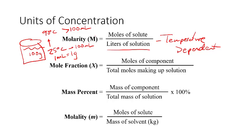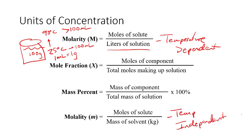Looking at the molality term — moles of solute over the mass of solvent in kilograms — 100 grams of water will weigh 100 grams no matter what temperature we're dealing with, whether 25, 90, or 1 degree Celsius. So this molality term is temperature independent, and it is therefore the concentration term we use for any considerations involving colligative properties.